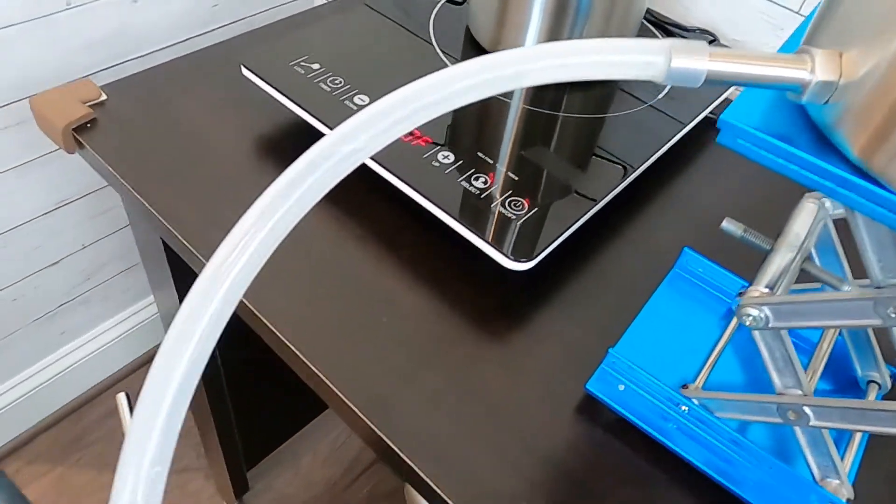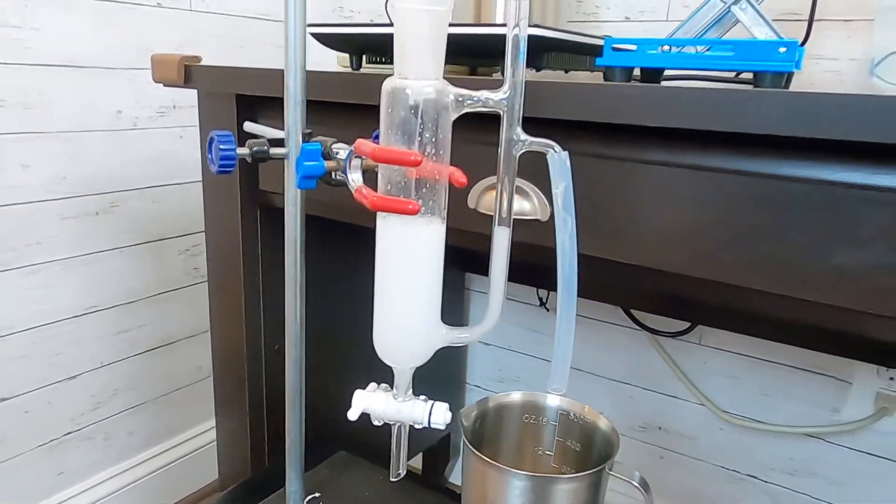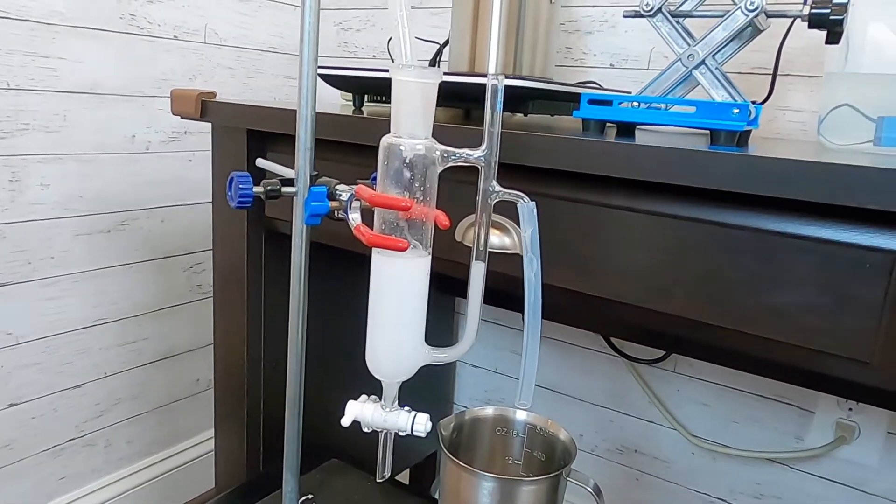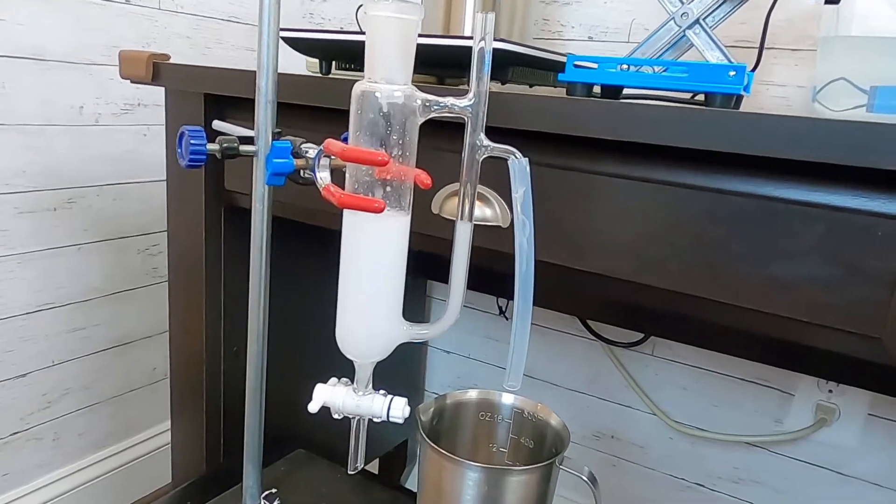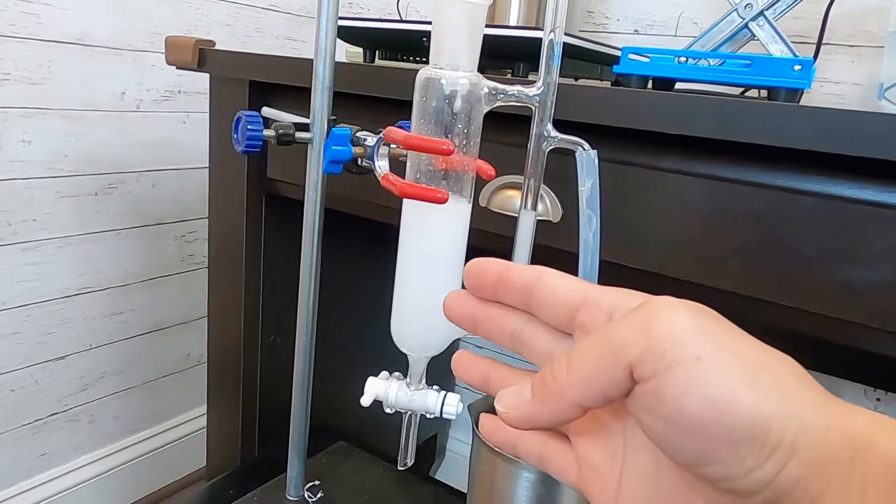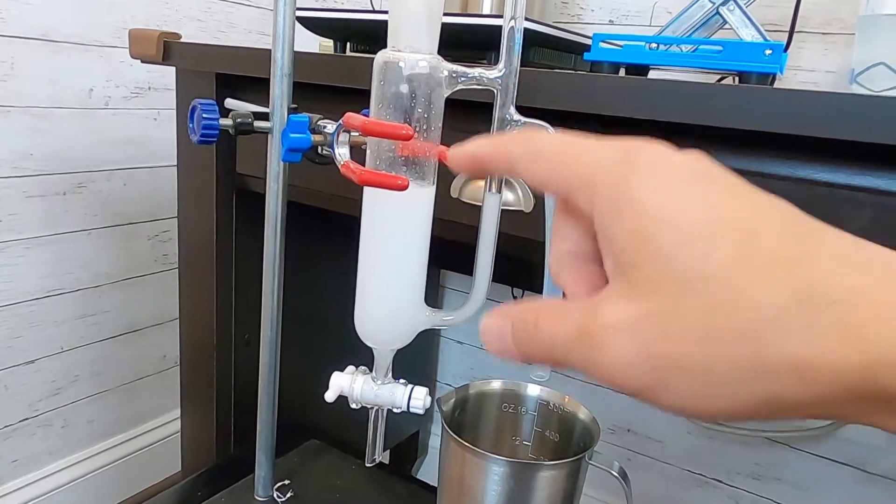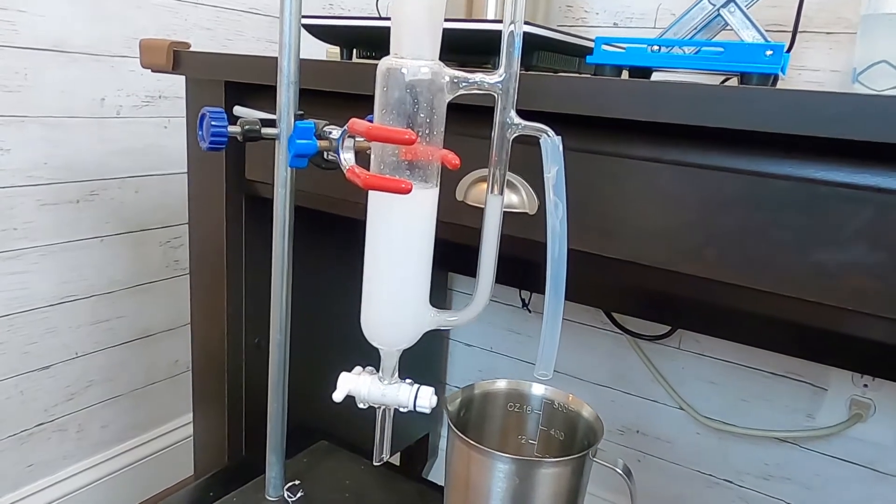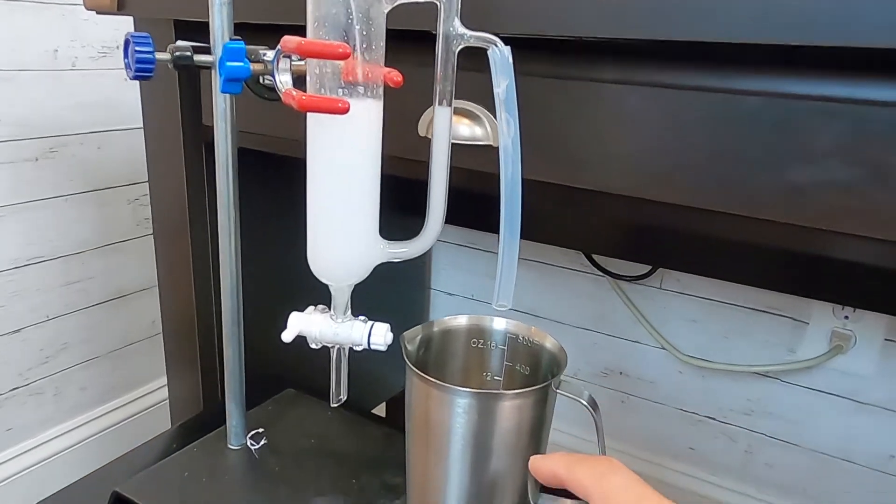So after the steam cool down through the coil and then I'm using my oil and the hydrosol separator. How it works is the oil and the hydrosol go into the main column and because oil is lighter so they will flow on the top.